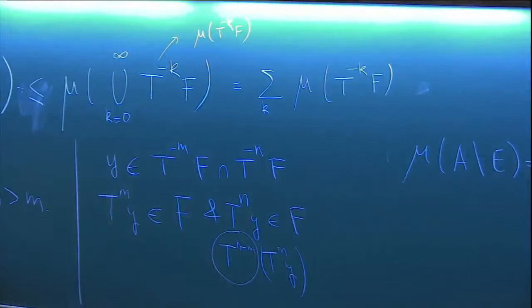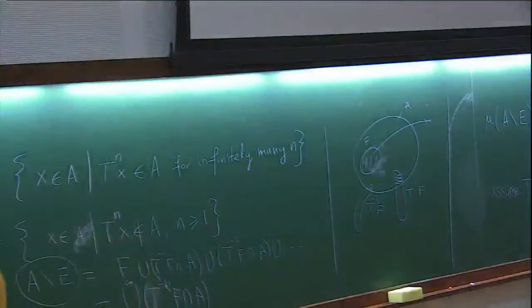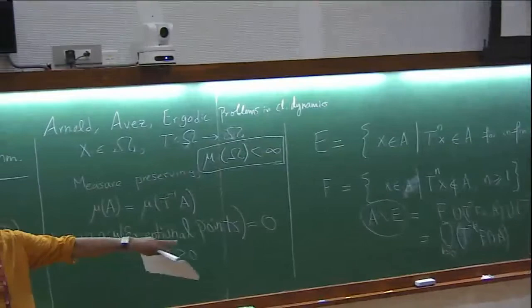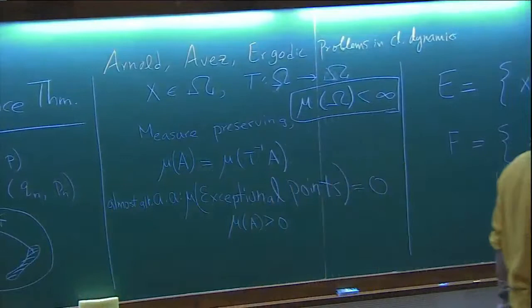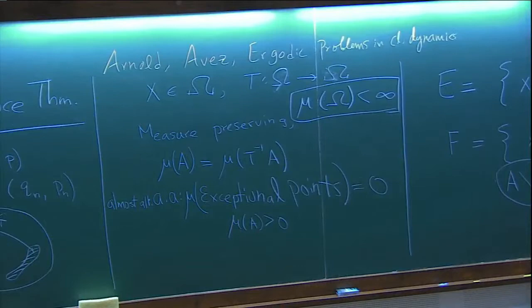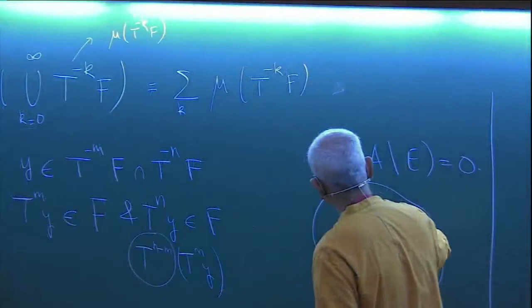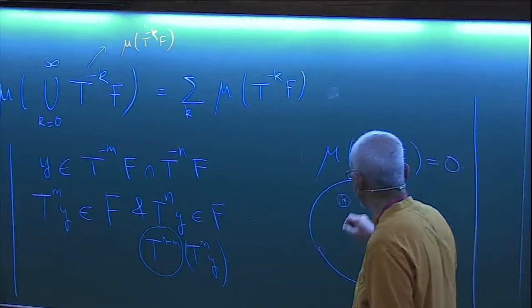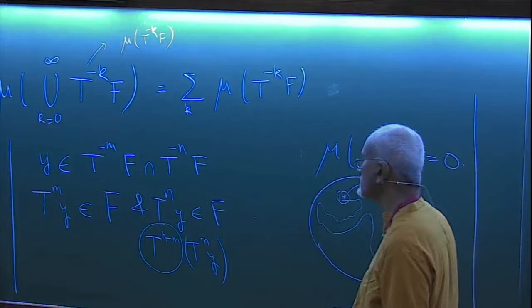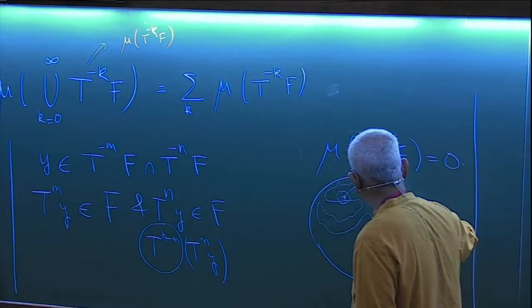It's quite a remarkable theorem for its generality. The crucial assumption is a bounded phase space — like an energy shell — so you cannot have particles going off to infinity as in a scattering system. It applies to all Hamiltonian systems. However small a set A you choose, almost all points in that set will wander around phase space and eventually return to A, leave again, and return infinitely often.